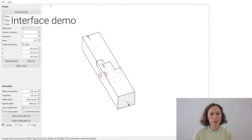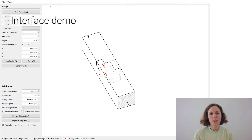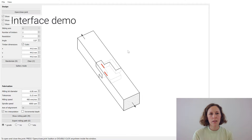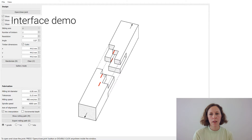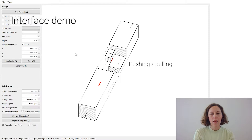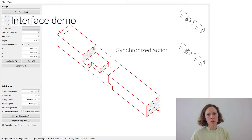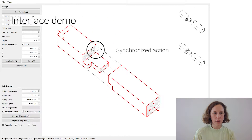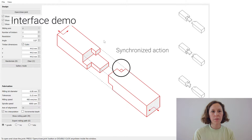Let me start by showing a real-time interface demo. We focus on the design of a single joint connecting two or more pieces of timber. The design space is a 3D grid of voxels, and the joint is edited by pushing and pulling on the faces like this. Notice how this action is synchronized, so when I add a voxel here, another one is removed here.